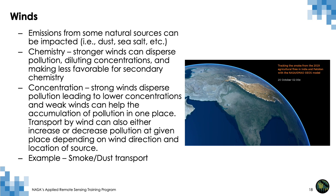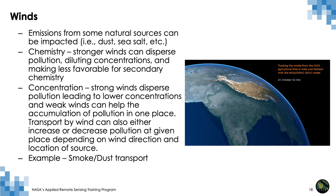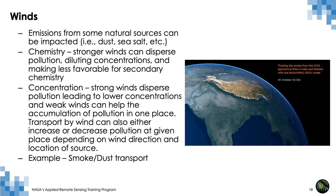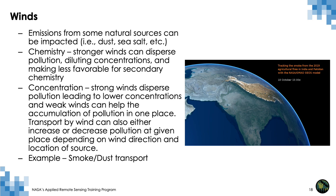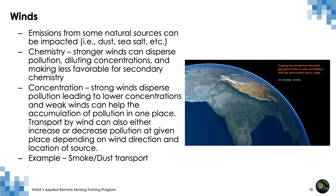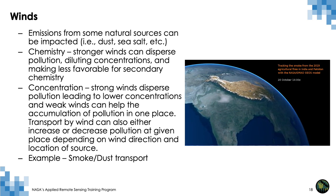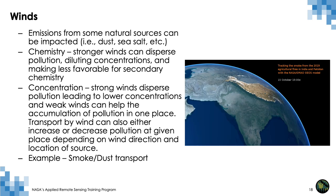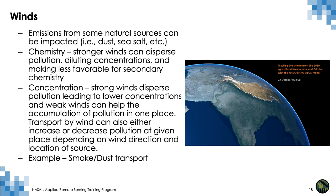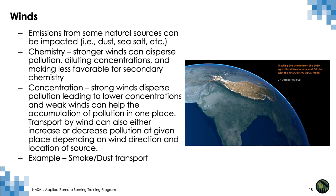Wind can also affect pollution concentration in different ways. Emissions from sources such as dust from dry soil and sea salt over oceans are highly dependent on wind speed, and their transport depends on both speed and direction. Emissions from sources are critical in generating secondary particles, and strong winds can disperse them, making less favorable conditions for chemical reactions. Similarly, strong winds quickly disperse particles and lower concentration, while calm winds can help accumulation and increase pollution. Transport of pollution from source to different places depends on both wind speed and direction, so it is critical to know wind conditions in different layers of the atmosphere to account for transport in forecasting models.